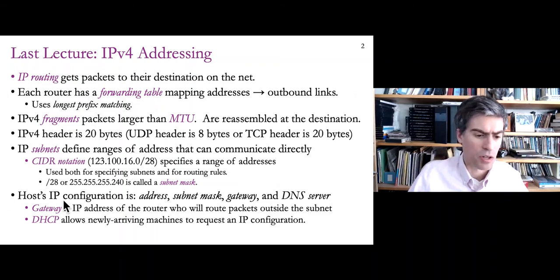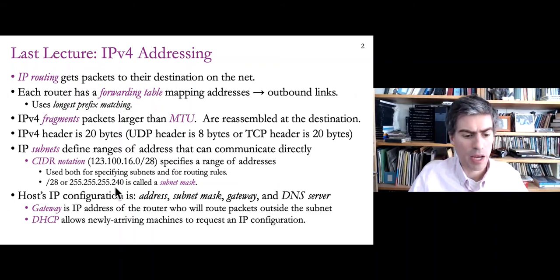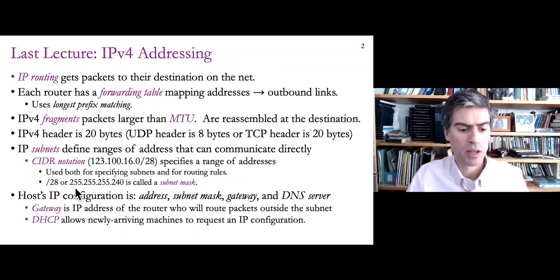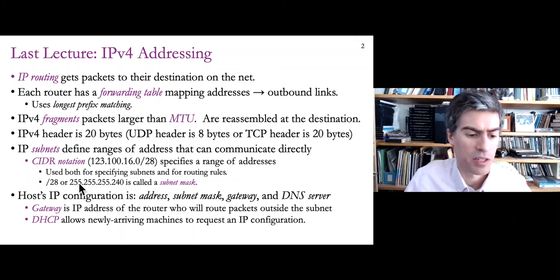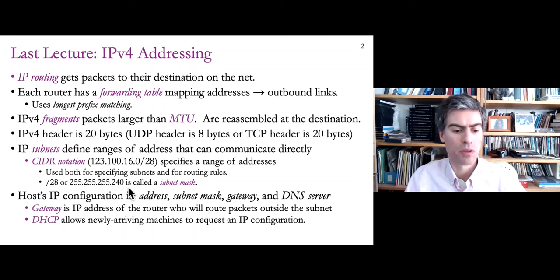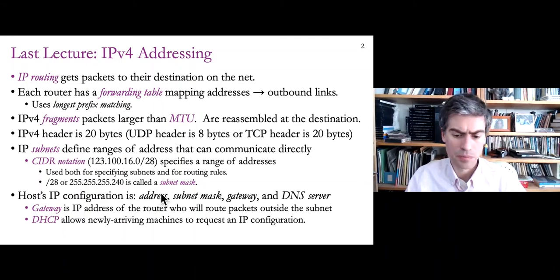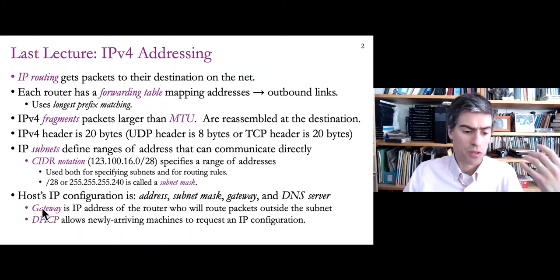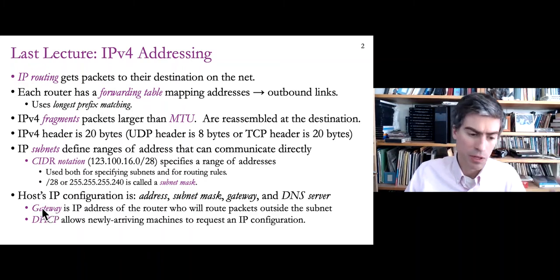There is also an alternative to CIDR notation that uses a subnet mask, where you have dotted quad numbers that start with all ones and end with all zeros. Finally, we talked about configuring a host to use IP — the internet, essentially.